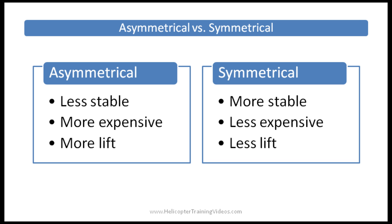A quick comparison of asymmetrical versus symmetrical airfoils, starting with asymmetrical — like the R-22 tail rotor. These are generally less stable. As the angle of attack changes (the angle that the blade meets oncoming wind), the center of pressure moves up and down the cord line, causing the airfoil to want to twist. This requires stronger materials and construction to avoid stresses, and can put strong control loads through the system. They also tend to be more expensive due to more complicated design and construction.